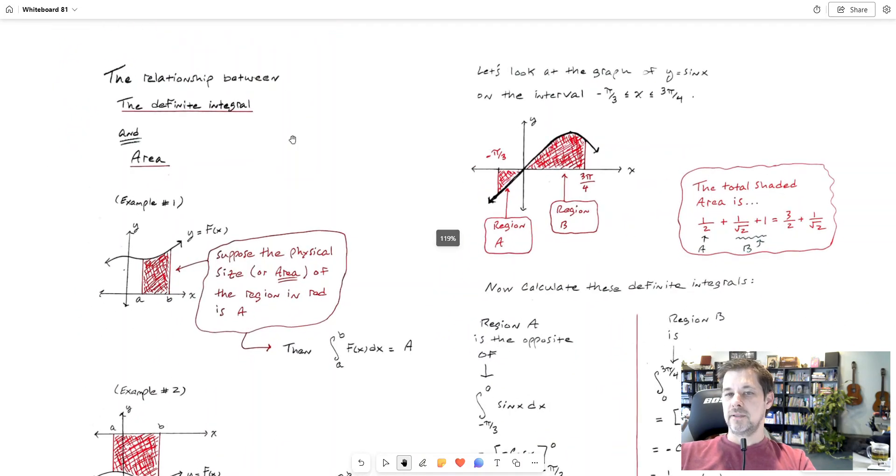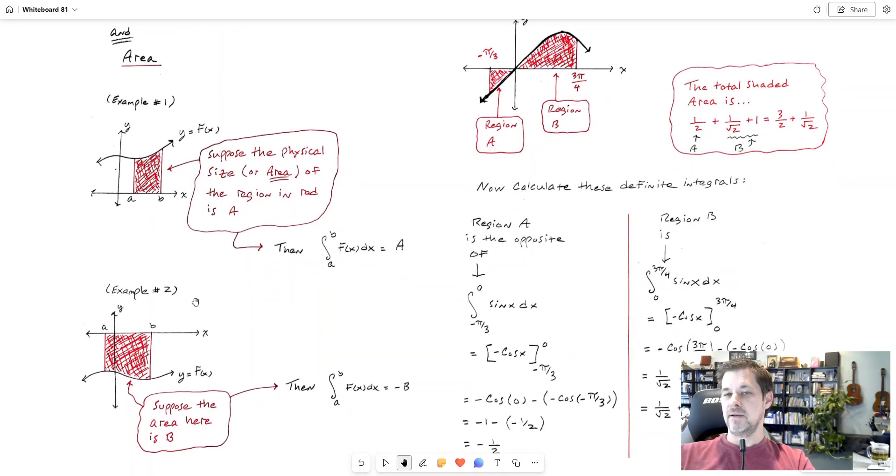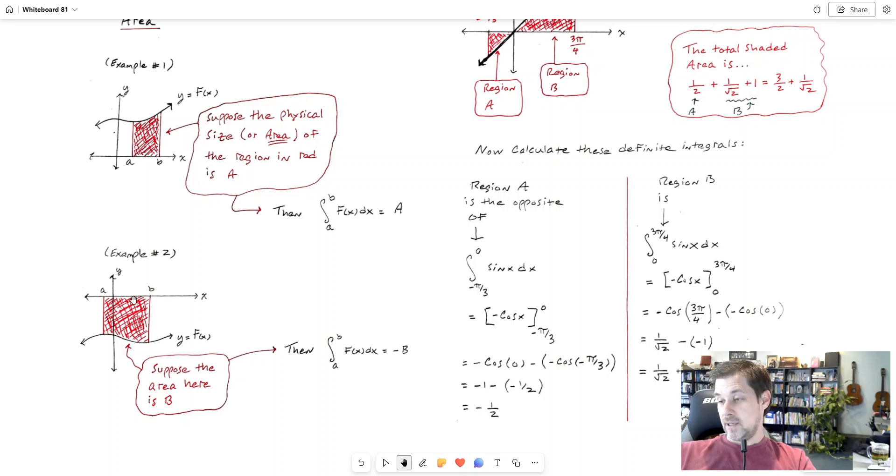Okay, so what's the relationship between the definite integral and area? I can break it down into two cases. Let's say that we have a curve f of x and it's entirely positive from a to b on the x-axis. Then this definite integral lower bound a upper bound b, whatever the answer to that turns out to be, will be the area of this region.